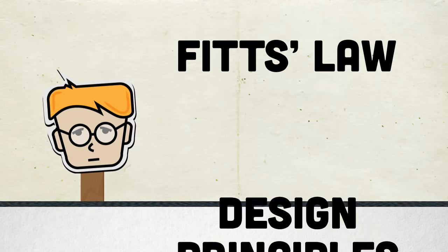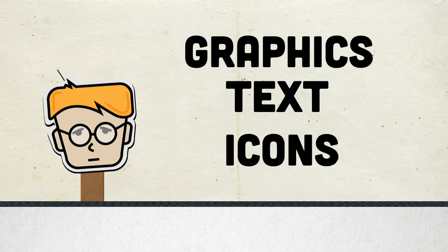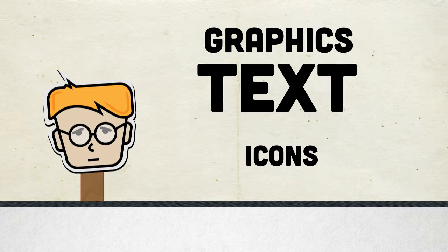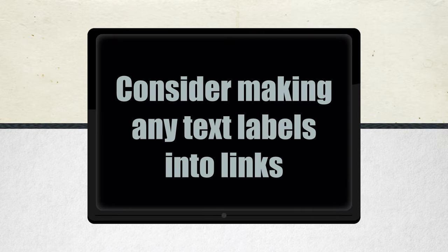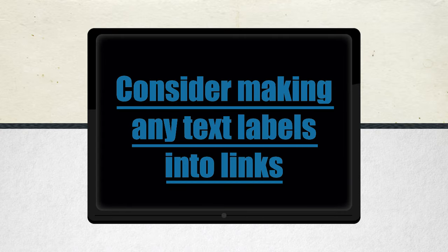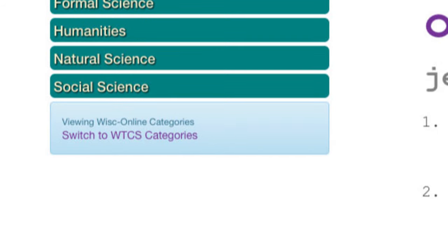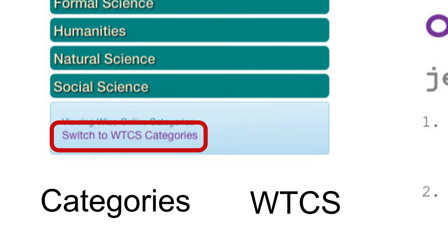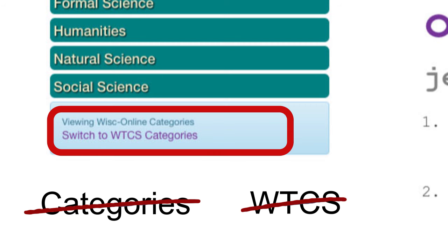Remember to apply Fitts' Law to your design principles. When designing graphics, text, and screen icons, always consider their sizes. Are they appropriately sized for their intended use? Consider making any text labels into links. Try making the whole phrase a link, rather than just one word. On the WiskOnline website, the entire phrase 'Switch to WTCS Categories' is a link instead of just 'Categories' or 'WTCS'. This makes the target bigger and easier for the user to hit.